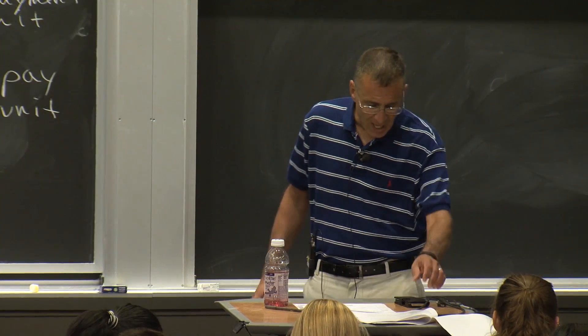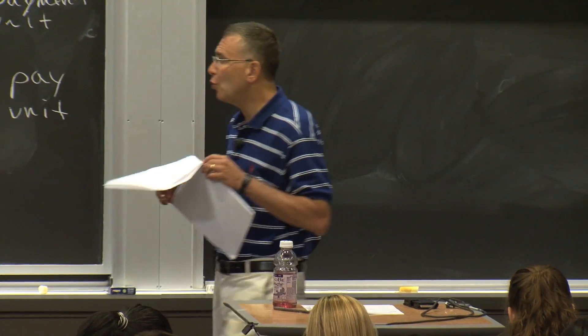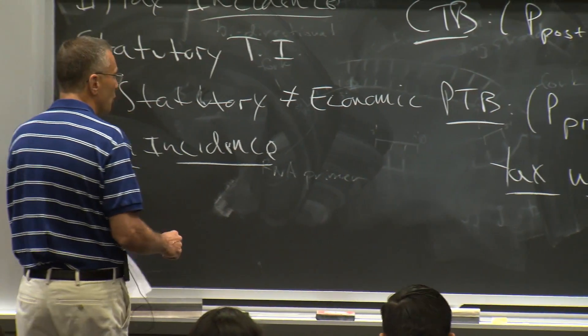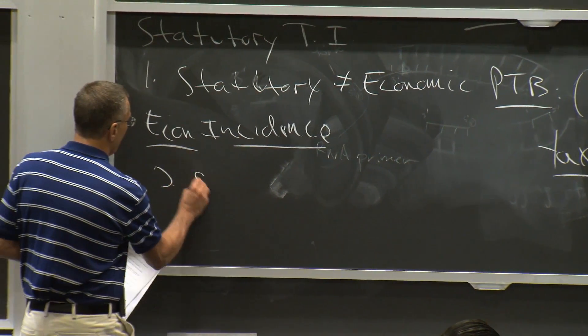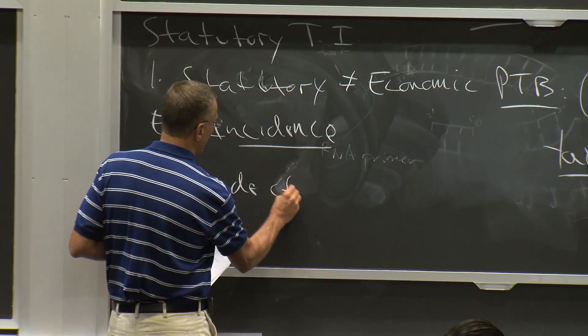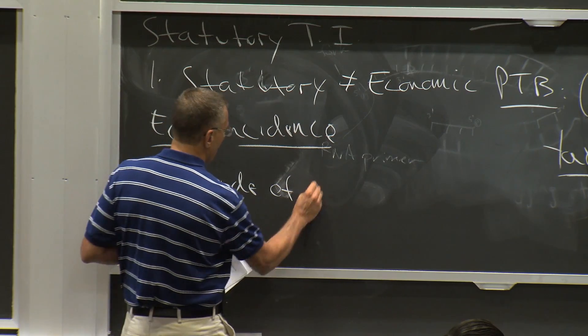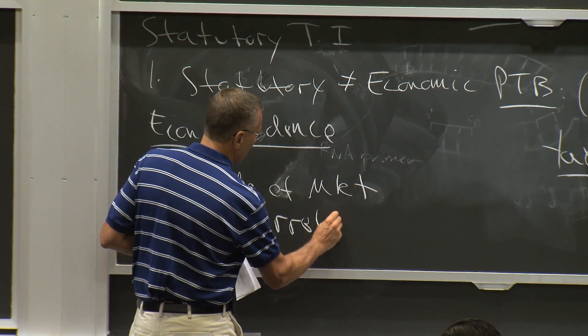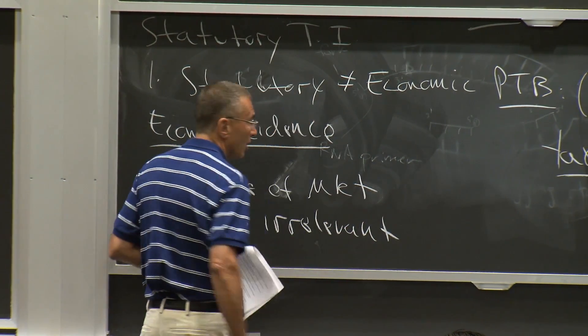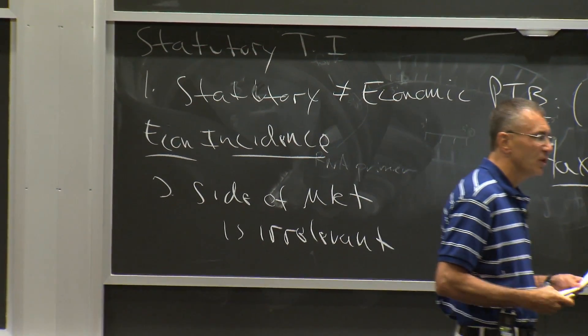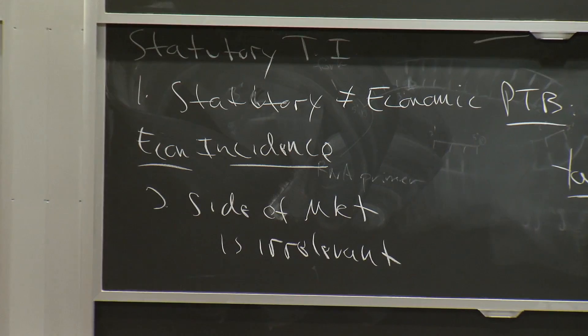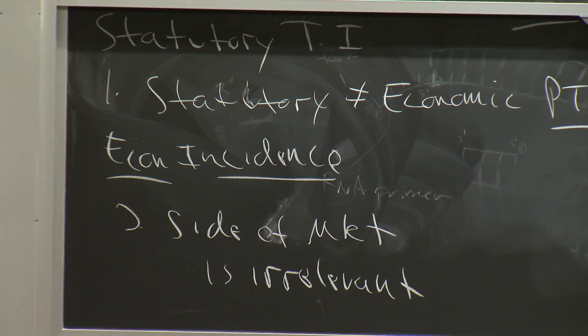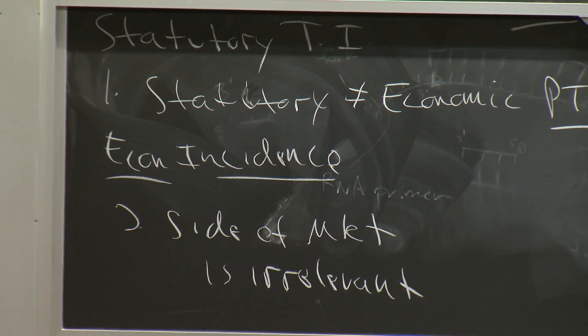That actually is a good segue to rule two about tax incidence. Rule two is the side of the market on which the tax is imposed is irrelevant. It doesn't matter who pays the tax to the government. You get the same outcome. This is really exciting.